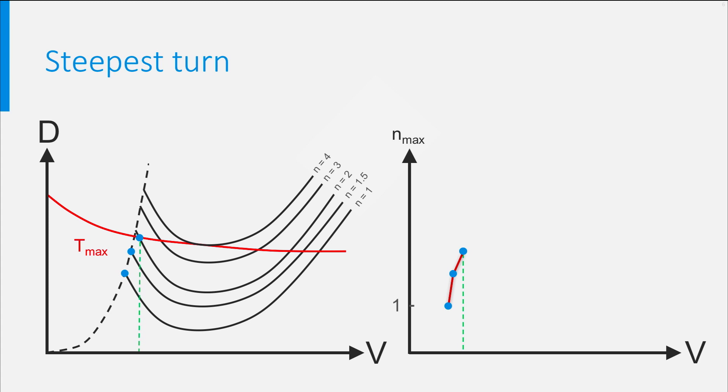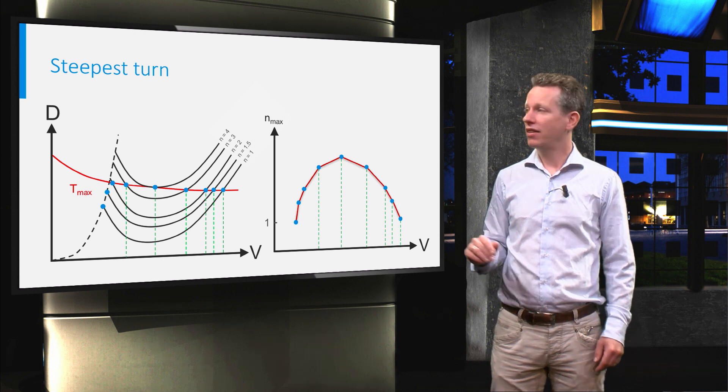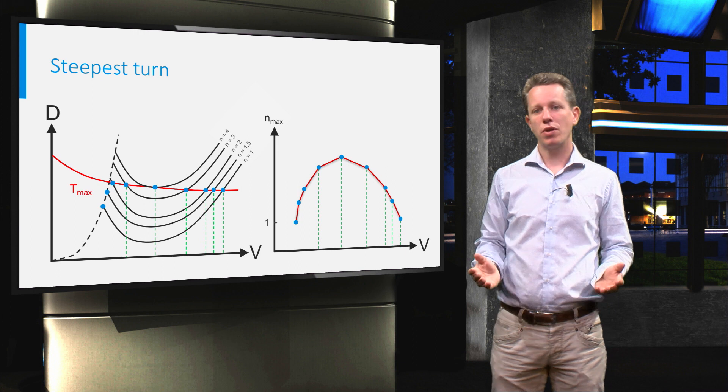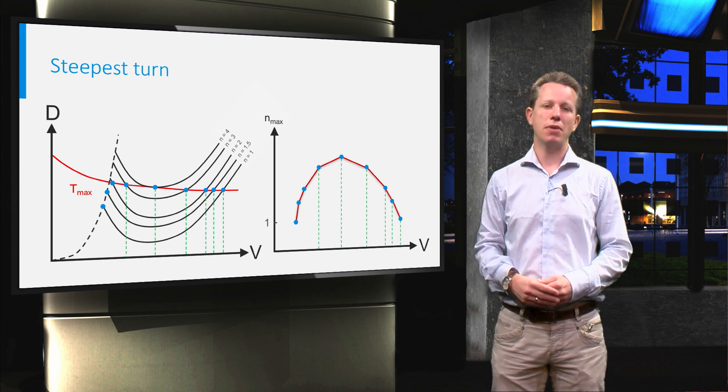Now we can go through this complete diagram to have all combinations of maximum load factor and maximum airspeed. You can see there is one airspeed which gives the highest load factor for the complete airspeed range. Typically this occurs near the minimum drag condition, where the ratio of CL over CD is maximum.